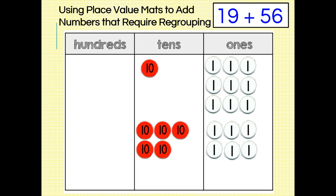We need to trade some of our ones disks for a tens disk, don't we? Let's swap out these 10 ones disks for a tens disk. Are we ready to total our place value columns? Yes, we are. We have seven tens and five ones left, so 19 plus 56 equals 75.